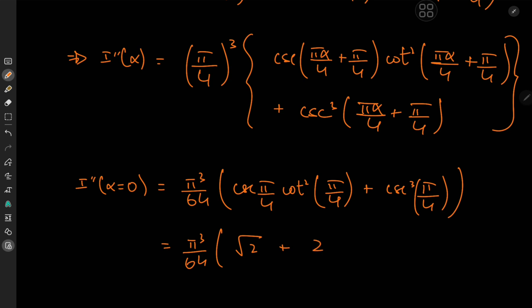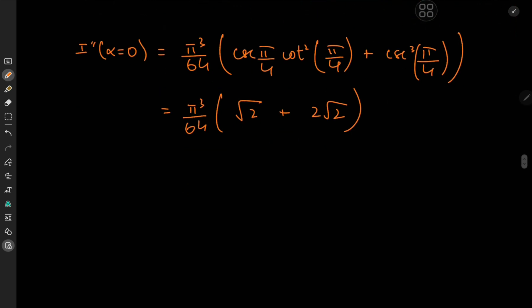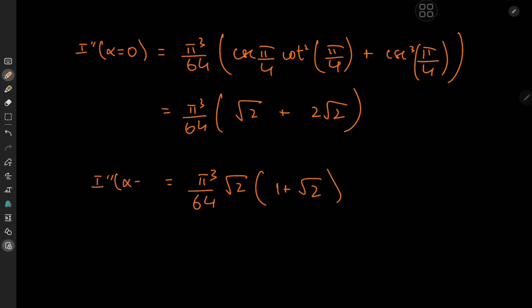So cosecant³(π/4) is (√2)³ = 2√2, and factoring out √2 we get (π³/64) · √2 · (1 + 2). That simplifies to (π³/64) · √2 · 3 = 3π³√2/64. That's a pretty nice result — that's one of the two second derivative evaluations we need.